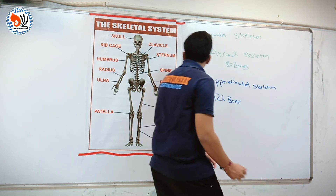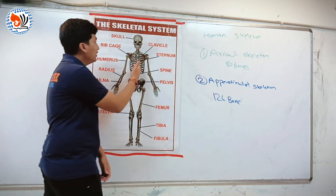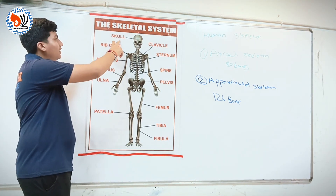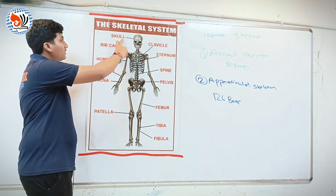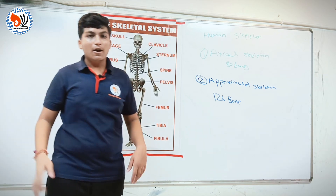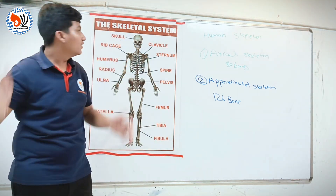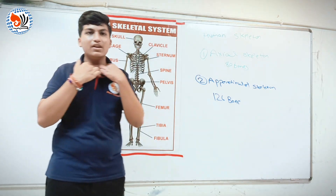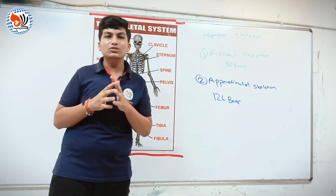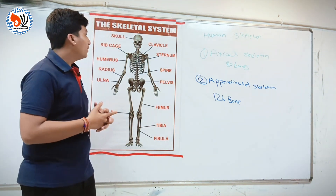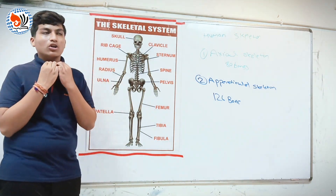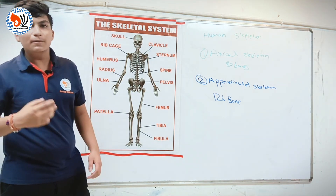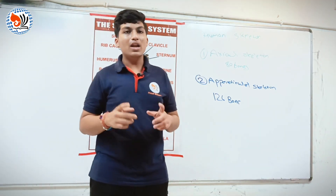Now we will learn with the help of this chart. First, as you can see here, there is the skull. Skull is the bone of our head. Second is clavicle. Clavicle is present here, and clavicle is also known as collar bone because it is present near our collars.